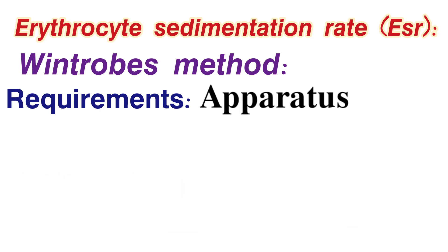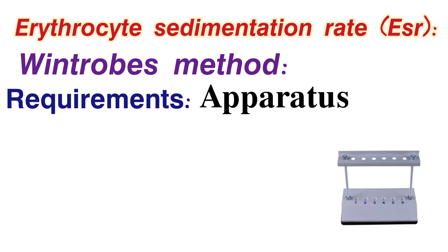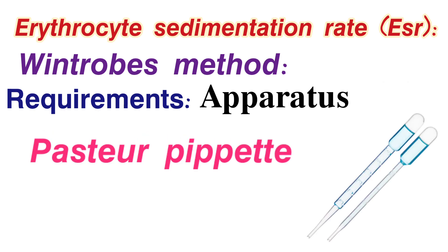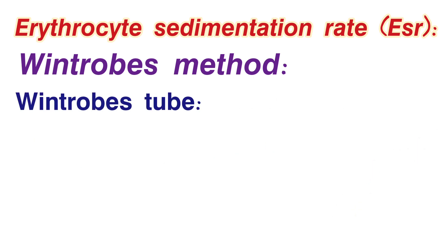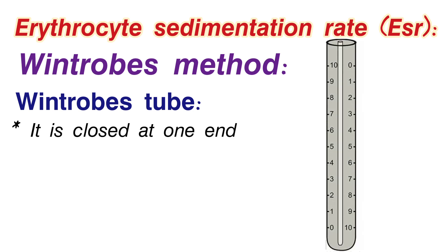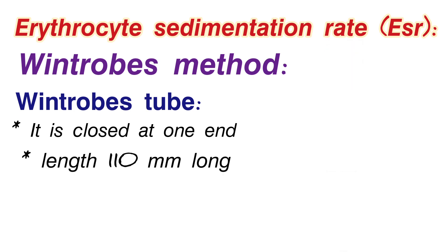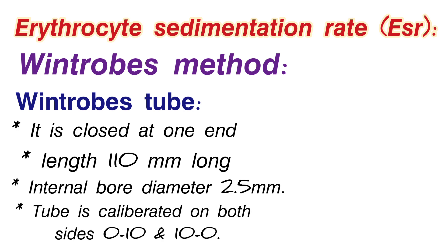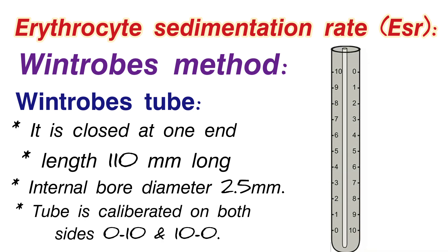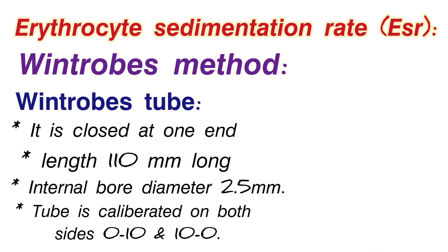The apparatus required includes a Winthrobe tube, Winthrobe stand, timer, and Pasteur pipette. The Winthrobe tube is closed at one end and open at the top. The tube length is 110 mm long with an internal bore diameter of 2.5 mm. It is calibrated with markings from 0 to 10 on one side and 10 to 0 on the other — in ascending and descending order.